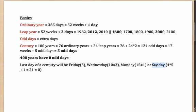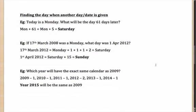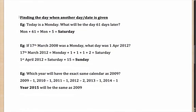Using these concepts, let's look at finding the day when another day or date is given. If today is a Monday, what will be the day 61 days later? There are 61 divided by 7 — 56 is divisible — leaving 5 odd days. Monday plus 5 odd days gives Saturday, which is the answer.